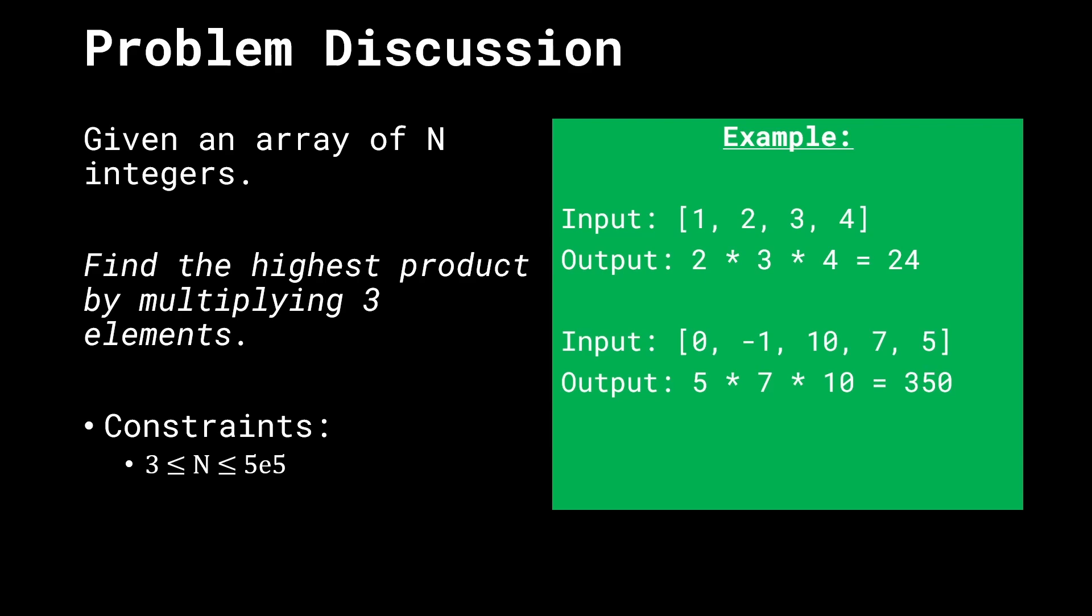Let's take a couple of examples to understand this better. When the input is [1, 2, 3, 4], the output is 24 because we multiply 2×3×4, which is the highest possible product. When the input is [0, -1, 10, 7, 5], we multiply 5×7×10 to get 350, which is the highest possible value, so we return 350 as the answer.